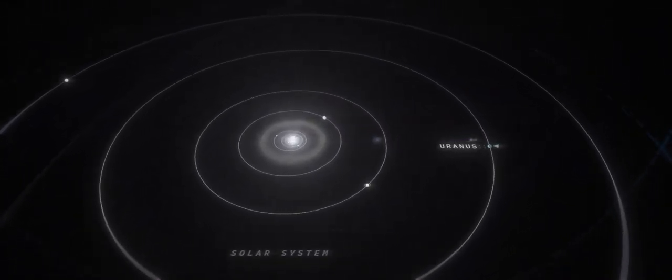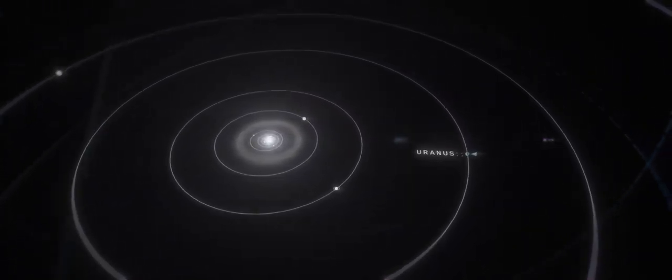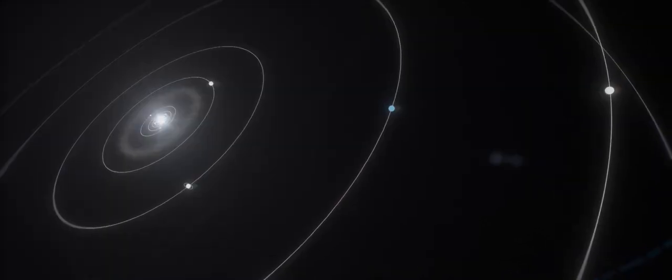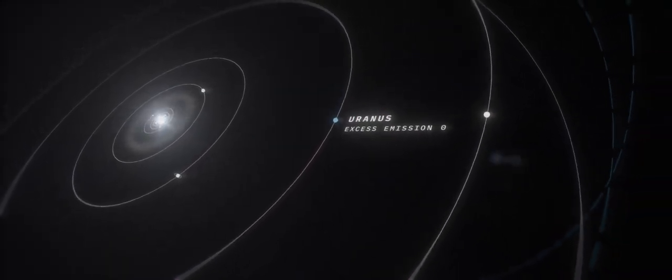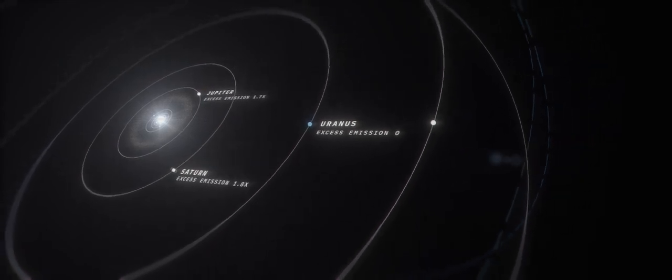Uranus is the seventh planet from the Sun and the third largest planet in the solar system. It also may have the coldest interior, emitting far less heat than its counterparts Jupiter, Saturn and Neptune.